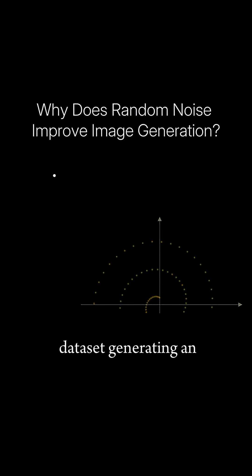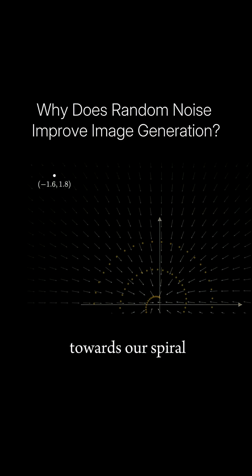On our 2D dataset, generating an image is equivalent to starting at a random location and working our way back to our spiral. Our model's vector field points us back towards our spiral.